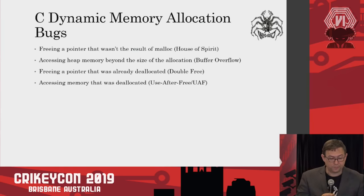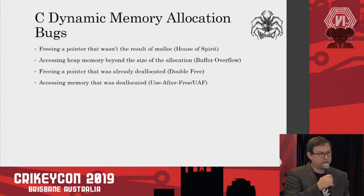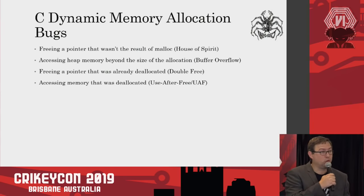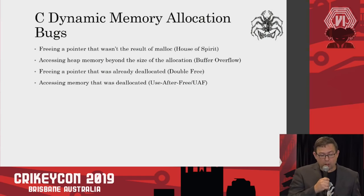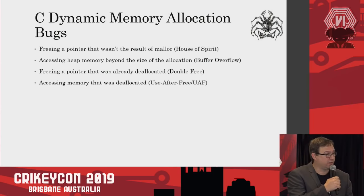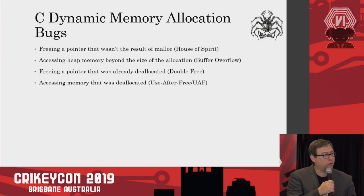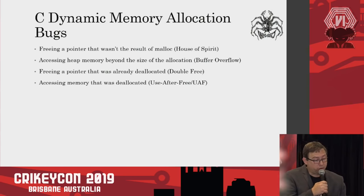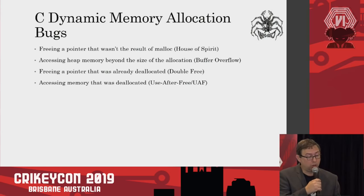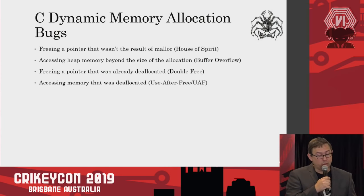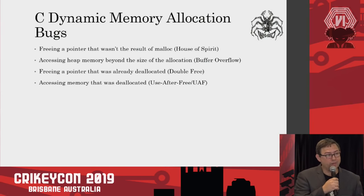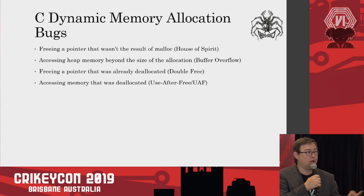Moving into heap exploitation, we need to understand what types of bugs in C programs lead to conditions that enable us to corrupt metadata. If you free a pointer that wasn't the result of a malloc, you can do weird things — there's an attack known as the house of spirit. If you free a pointer that was already deallocated, you have a double free, which can be exploited. And if you access memory that was deallocated but hasn't since been reallocated, you have a use-after-free. These are the types of bugs we're looking for in C programs.